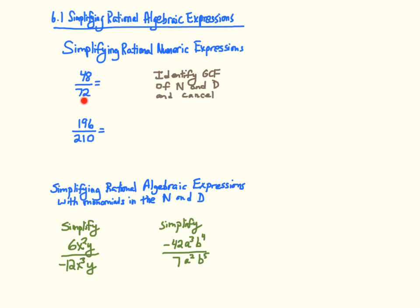If I have 48 over 72, I want to identify the greatest common factor in the numerator and denominator and then cancel that, and the remaining fraction is the simplified fraction. The greatest common factor is 24, so I'll cancel out that factor of 24 and I'll have a simplified fraction of 2 thirds.